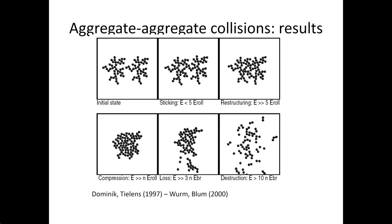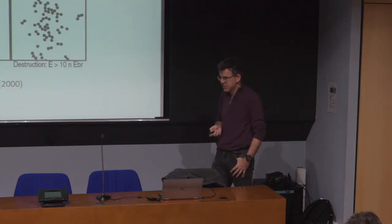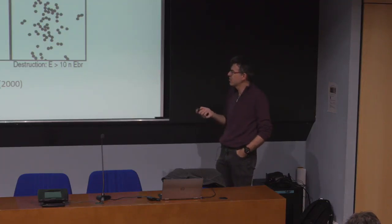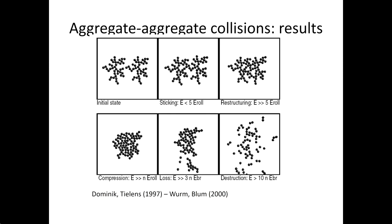For low energy, two fractal structures coming together form just a bigger fractal structure, roughly keeping the same porosity. As you increase the energy, you get restructuring and compaction — reduction of porosity and fractal dimension. If you continue to increase kinetic energy, you get breakups. If the collision energy is large enough, everything is destroyed and the monomers are released free into space. So the question is: what are the typical collision energies in a disk, and what is the maximum particle size that can grow?